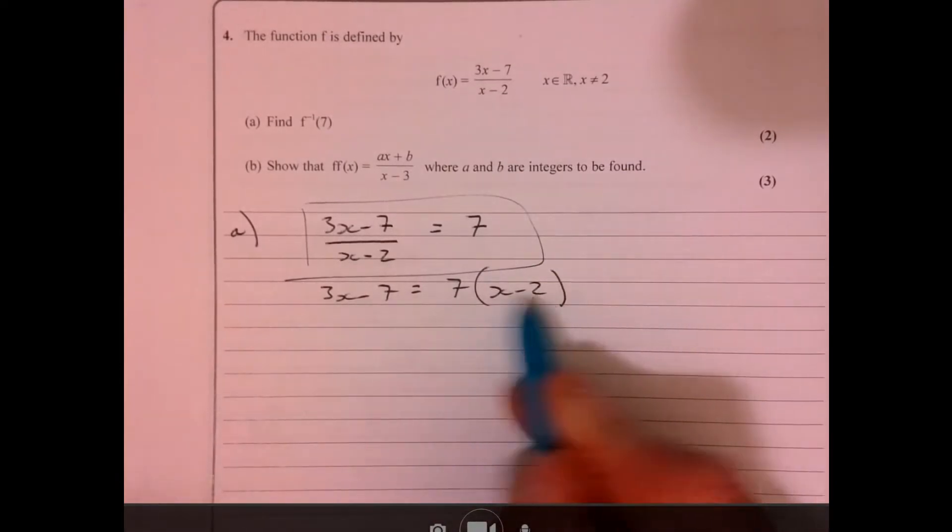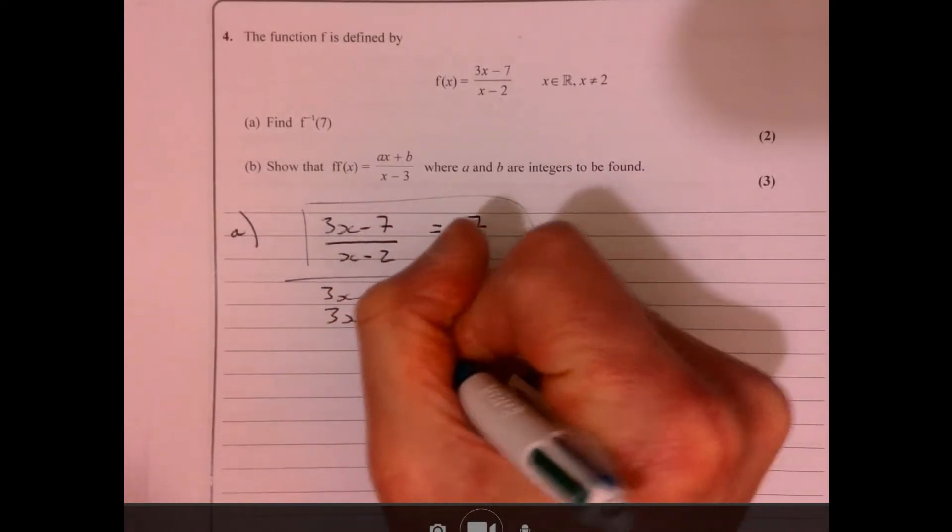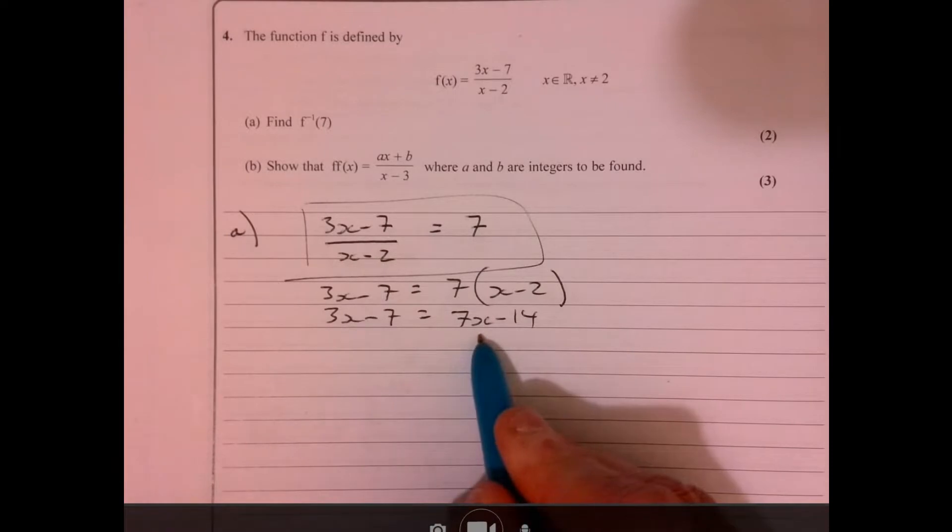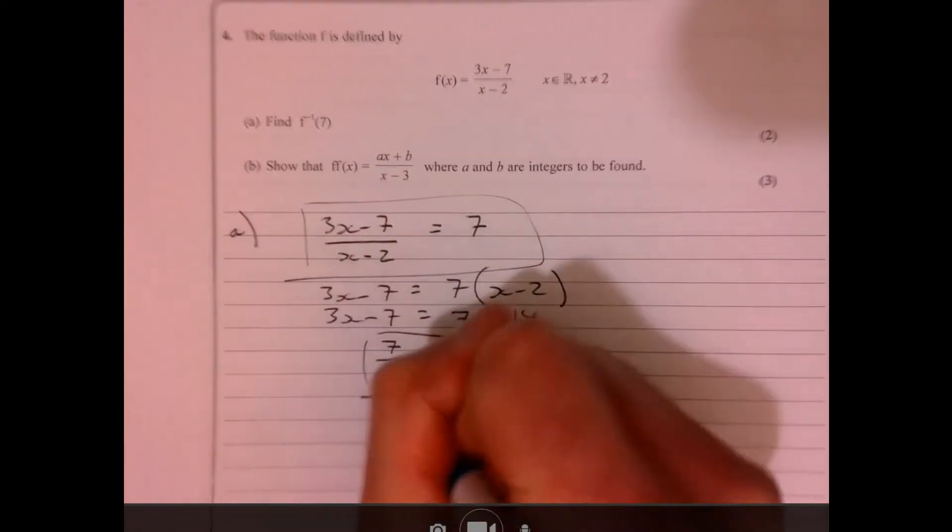And then if you solve it from there, multiply this out. We've got 7x minus 14. 3x minus 7. Add 14. Take away the 3x. And that's going to give you x equals 7 over 4. We've done that.